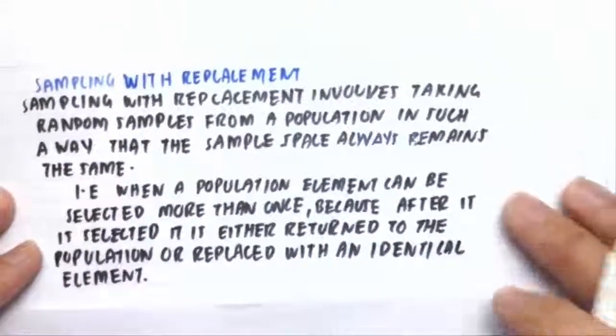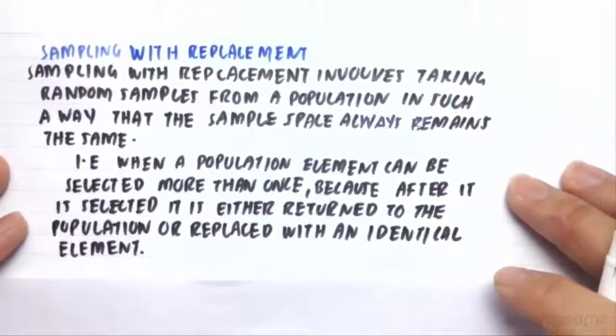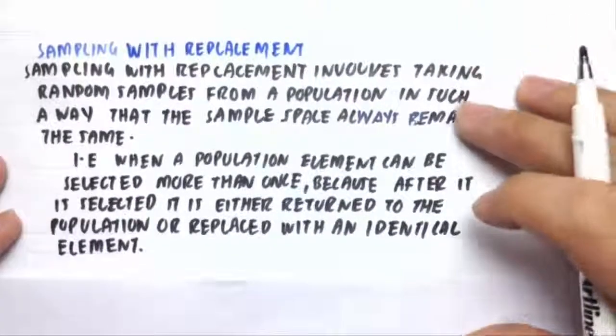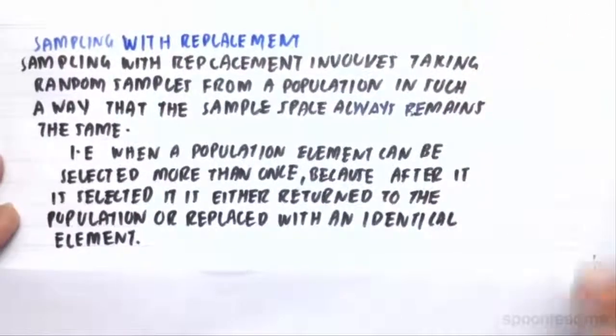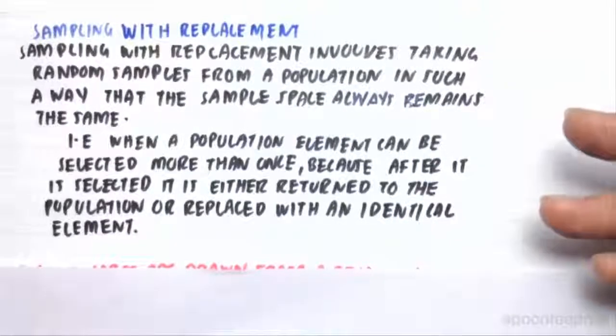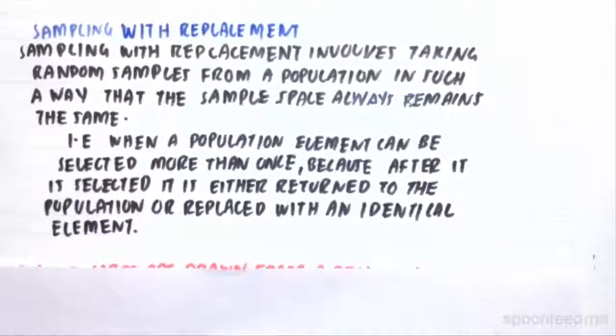So then there's something called sampling with replacement. So what is sampling with replacement? Well, sampling with replacement involves taking random samples from a population in such a way that the sample space always remains the same. So in other words, when a population element can be selected more than once, because after it is selected, it is either returned to the population or replaced with an identical element.